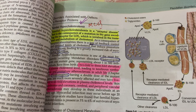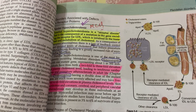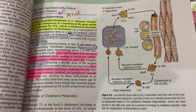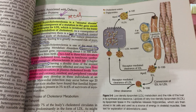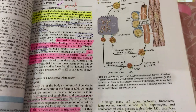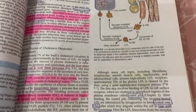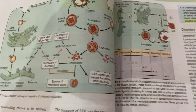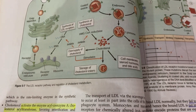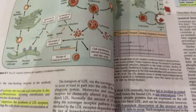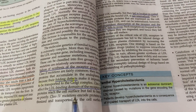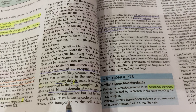Familial hypercholesterolemia is important from the MCQ point of view. Figure 5.6 was covered in second year lipid portion, so it is not so important from the SQ point of view — just go through it for MCQs. Go through figures 5.7 and 5.8, and you should know about all five mutations associated with familial hypercholesterolemia, which is important from both the SQ and MCQ point of view.